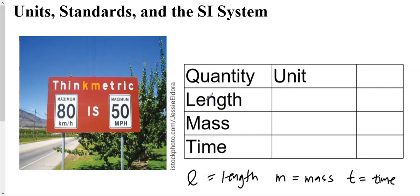We have these three quantities. You have length, symbol L; mass, symbol M; and time, whose symbol is lowercase t. Do not get confused with this symbol as the unit because they have different units. The unit for length would be meter, whose symbol is lowercase m.